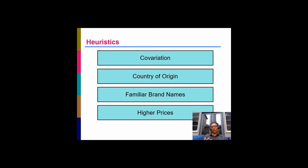The four most common heuristics used by consumers are: co-variation, country of origin, familiar brand names, and higher prices. Let me explain each of these.